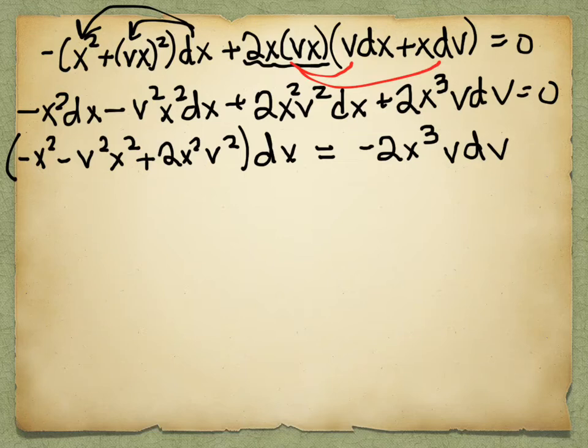Taylor suggests u-substitution with u = 1 - v², so du = -2v·dv — which is nearly exactly what we have on top. We can rewrite the right side as (2v)/(1 - v²)dv with a sign adjustment, giving a negative integral of du/u. The antiderivative on the left is ln|x|, and on the right is -ln|1 - v²|, plus a constant c₁.